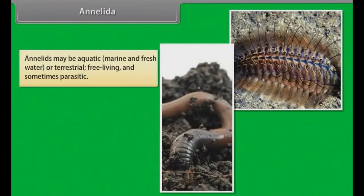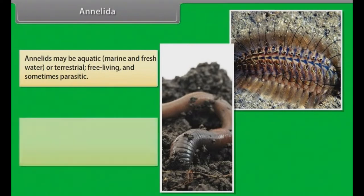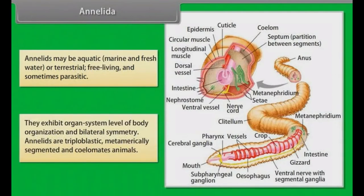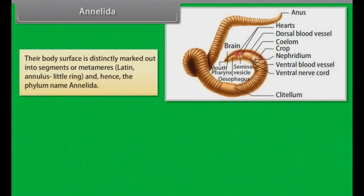Annelida. Annelids may be aquatic — that is marine and freshwater — or terrestrial, free-living and sometimes parasitic. They exhibit organ system level of body organization and bilateral symmetry. Annelids are triploblastic, metamerically segmented and coelomate animals. Their body surface is distinctly marked out into segments or metameres — from the Latin word 'annulus' meaning little ring — and hence the phylum name Annelida.